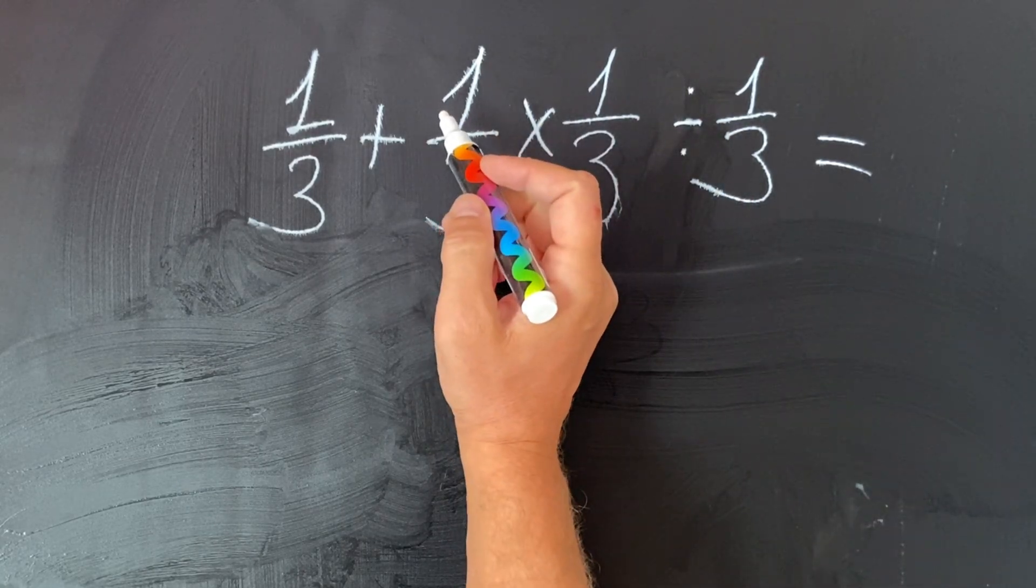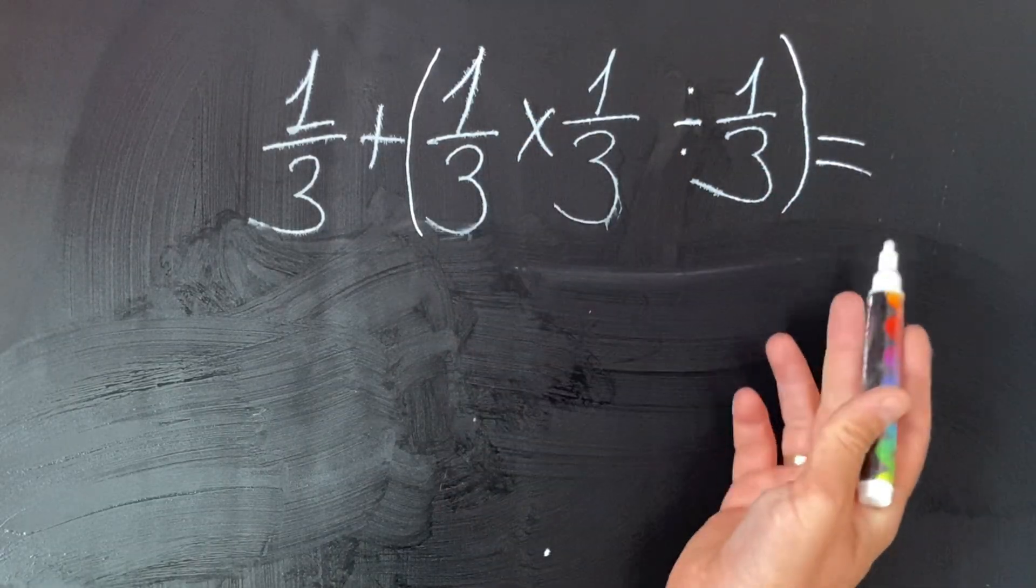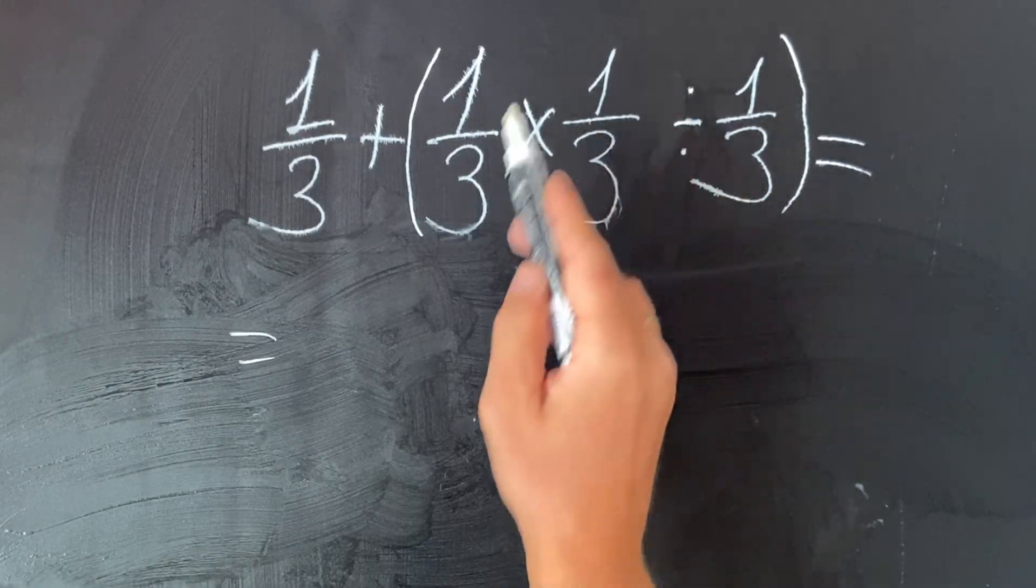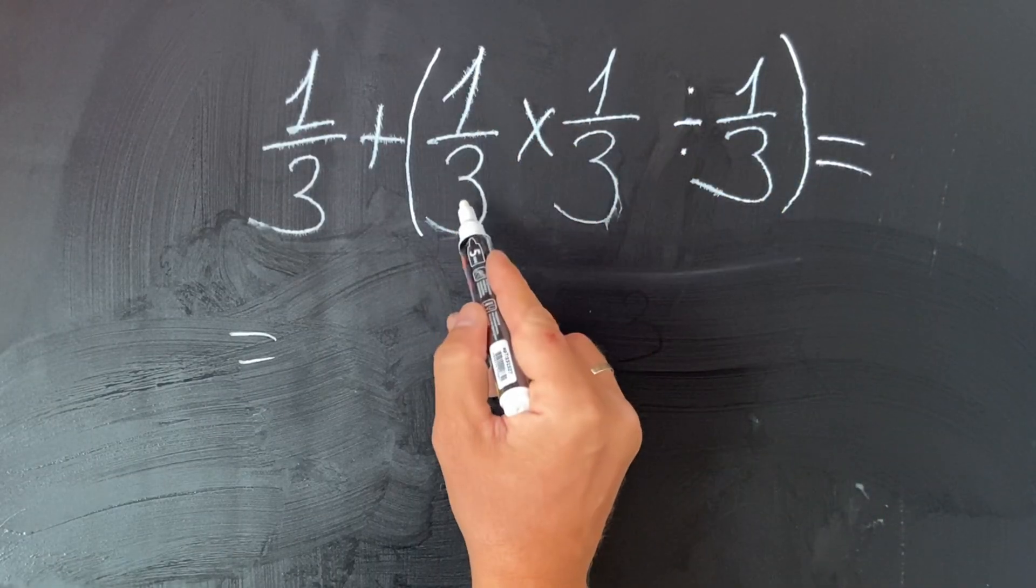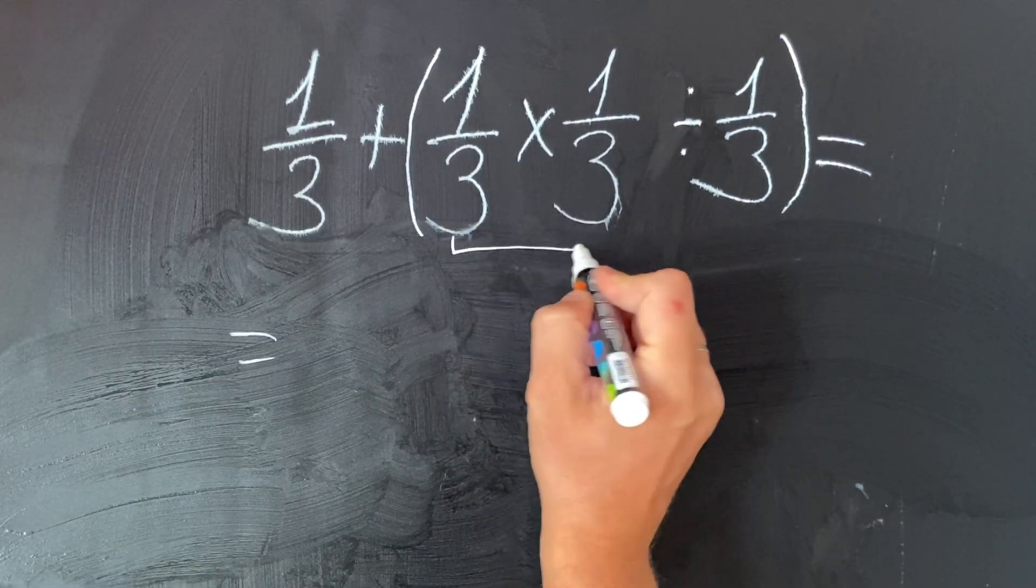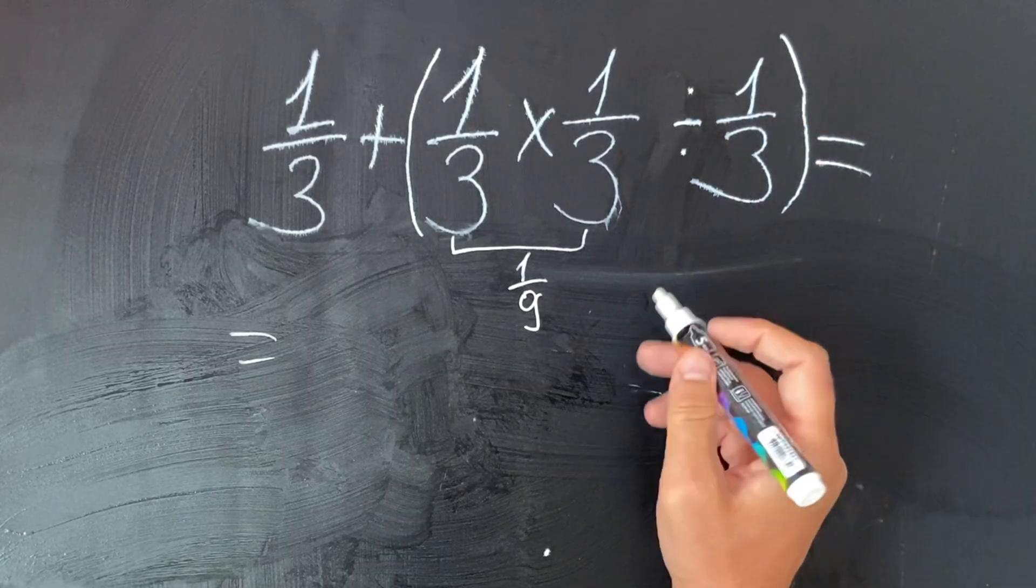So you can mentally add brackets around the multiplication and division to see it clearly. In this case, we first calculate what we have in brackets. One-third multiply by one-third is one-ninth. We have here one-ninth divided by one-third.